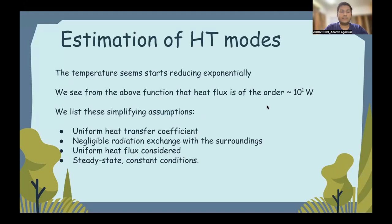As we will see, the temperature starts reducing exponentially and we see from the above calculation that the heat flux is of the order approximately 10^1 watts. And now we finally obtain these simplifying assumptions. The first is that the heat transfer coefficient is assumed to be uniform throughout. Second is that the radiation exchange taking place with the surrounding is basically negligible. The third is that heat flux is considered to be uniform. And the fourth is that the entire system is basically assumed to have steady state and constant conditions.